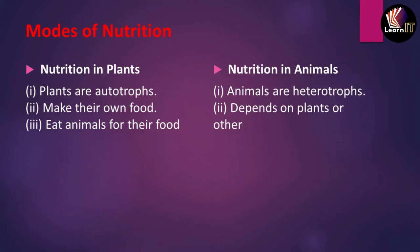In this topic we'll be discussing the modes of nutrition. The modes have been divided into two parts: one in plants and one in animals. Plants are basically called autotrophs because they make their own food with the help of photosynthesis. All other organisms directly or indirectly depend on plants. The second mode of nutrition is in animals — all animals depend on plants — that's why they are called heterotrophs, meaning organisms which depend on other organisms or plants for their food.